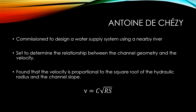In this equation, the term C is a factor of proportionality that relates or changes from channel to channel. The S-value is the longitudinal slope, which we will discuss later in this section. And the R-value is the hydraulic radius, which we already know is the ratio of the flow area to its wetted perimeter.